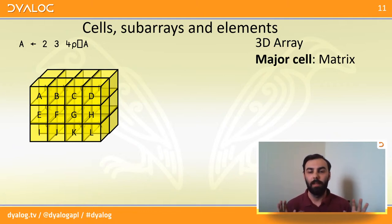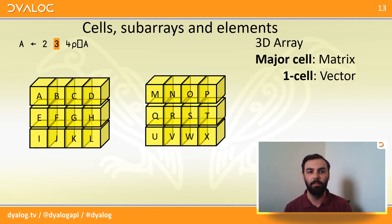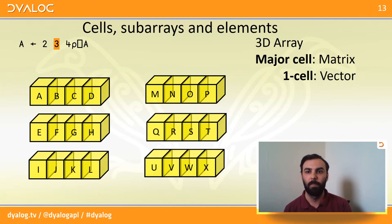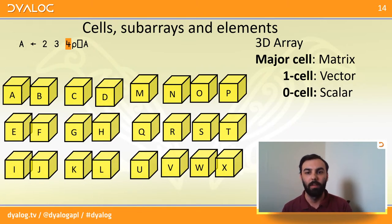But just to reiterate and also introduce one more piece of terminology, a major cell is a cell of rank one less than that of the entire array from which it's selected. So for this example, we have a three dimensional array, a rank three array, and the major cells are the two matrices. And then going in decreasingly major order, so less and less major, each of these matrices consists of three one cells or vectors. And then in turn, each of these vectors consists of four zero cells or scalars. So that's just the terminology we're going to be using today.